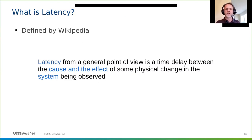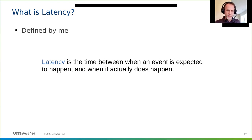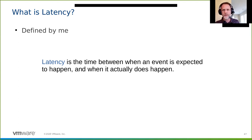When you look up latency in Wikipedia, it says: 'the time delay between the cause and the effect of some physical change in the system being observed.' I like to define it as: the time between when an event is expected to happen and when it actually does happen. Think about sitting in traffic—the time between the light turning green and the car in front of you moving forward is a latency.